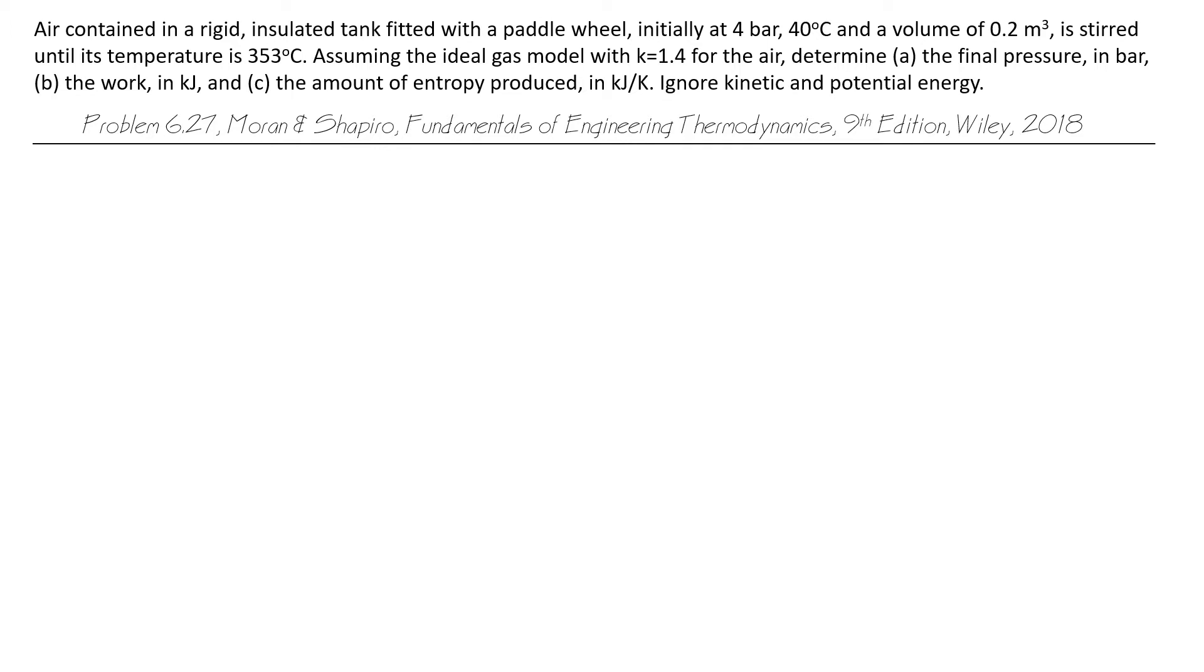Assuming the ideal gas model with K equals 1.4 for the air, determine (a) the final pressure in bar, (b) the work in kilojoules, and (c) the amount of entropy produced in kilojoules per kelvin. Ignore kinetic and potential energy.